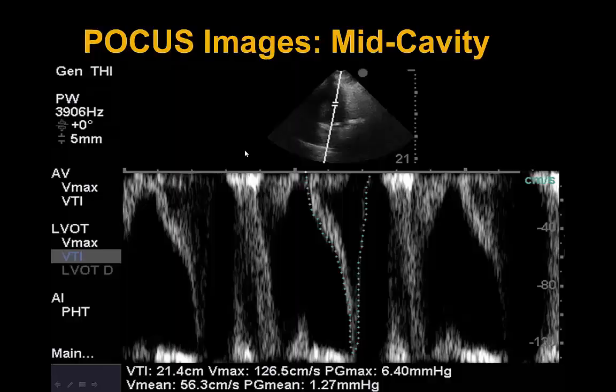Using pulse wave Doppler, we creep along the mid-cavitary segment to assess for a mid-cavitary gradient. We see a very typical dagger-shaped VTI, which is suggestive of intracavitary hypertrophic cardiomyopathy. The VTI measures 21, with a max gradient of 6.4 and a mean gradient of 1.27 mmHg. Although these gradients appear modest now, if the left ventricle were underfilled, the peak and mean gradients would be significantly more pronounced. The dagger-shaped envelope is the key finding consistent with HOCM.